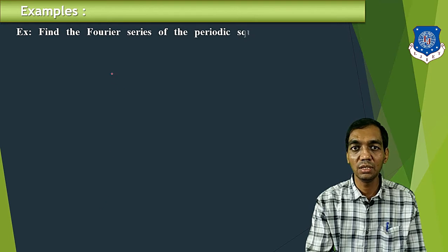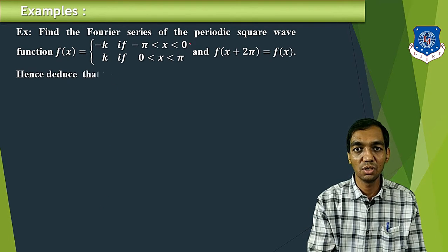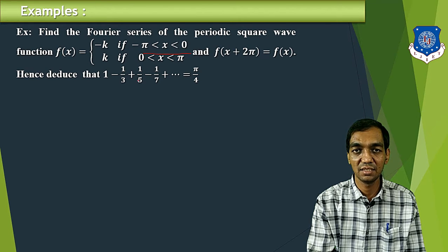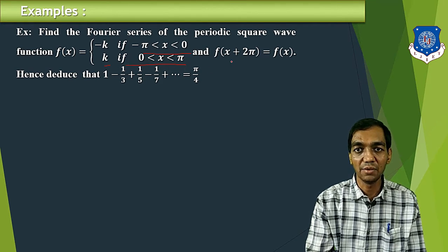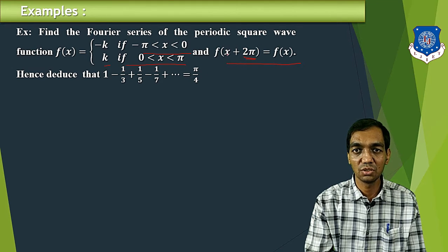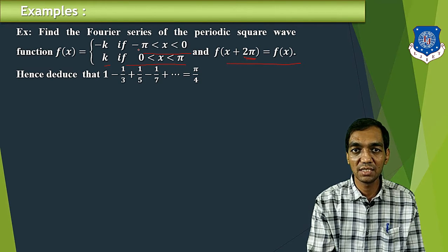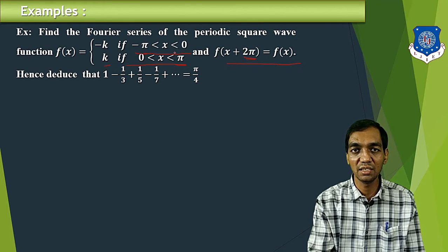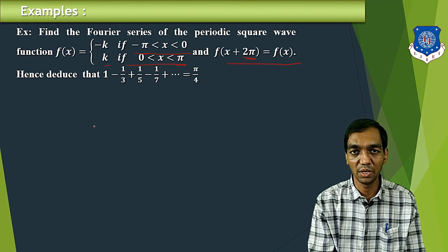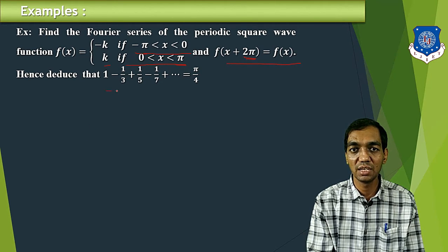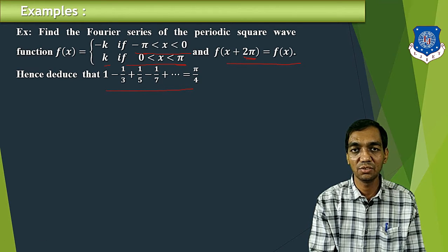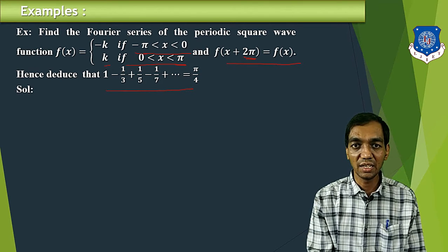Now we go to the example. Find the Fourier series of a periodic square wave function: f(x) = −k for −π < x < 0, and f(x) = k for 0 < x < π, with f(x+2π) = f(x). That means the period is 2π. The interval runs from −π to π, so the total length is 2π. Also deduce that 1 − 1/3 + 1/5 − 1/7 + ⋯ = π/4.